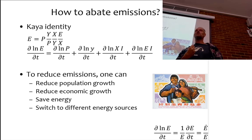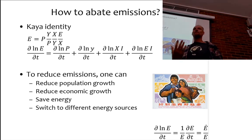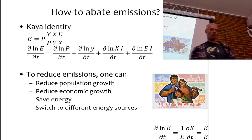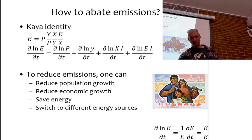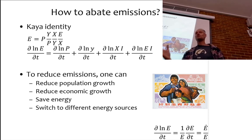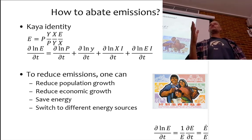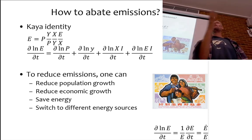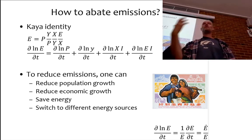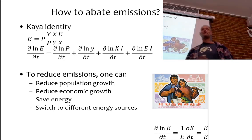China has for a long time in international climate negotiations claimed that its one-child policy is its major contribution to international climate policy — but that is complete hogwash. The one-child policy was introduced in 1980 for reasons completely unrelated to climate change. Now that China is concerned about climate change, they have abolished it and replaced it first with a two-child policy and nowadays a three-child policy — not very effective.